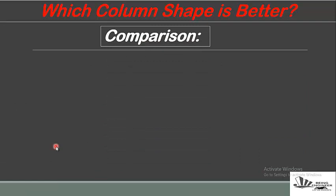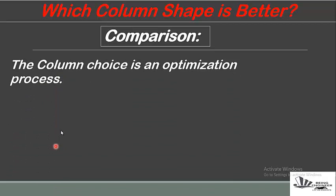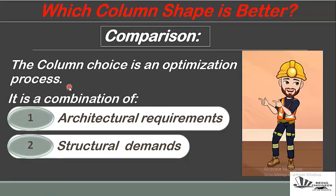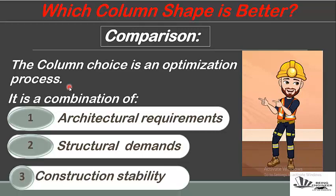The column choice is always an optimization process. The choice of column is not simply yours — it is a combination of: first, architectural requirements; second, structural demands; and third, construction stability. One cannot prefer one shape over another because it is this combination of factors that drives the decision.